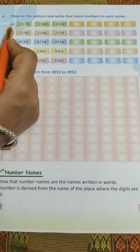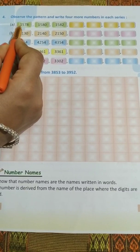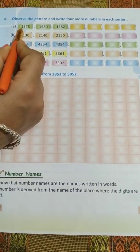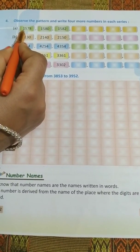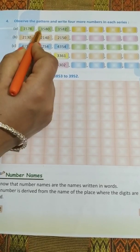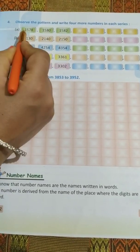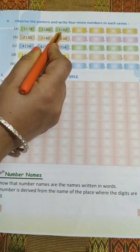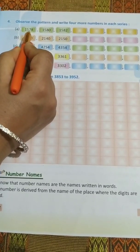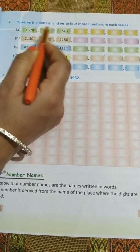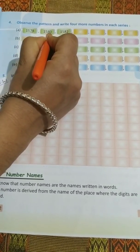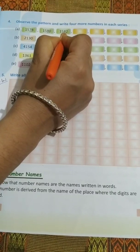Observe the first question. Here, observe the first digit from the left side: 1 here, 1, 1. 5, 5, 5 same in all the 3 numbers. Here it is 78, here it is 80, here it is 80, and here it is 82.